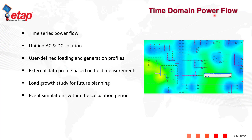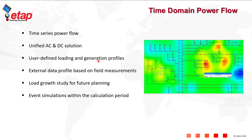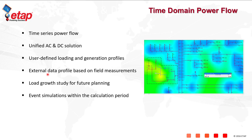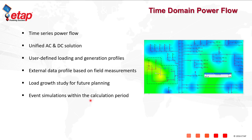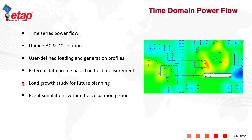ETAP also includes time domain power flow. Time domain power flow, or time series power flow, is a unified AC and DC solution. It uses user-defined loading as well as generation profiles. You can also choose external data such as data from Excel, which can be obtained from field measurements. You can also simulate events such as circuit breaker operation during the simulation period. The simulation period can be a single year or multiple years for future planning.